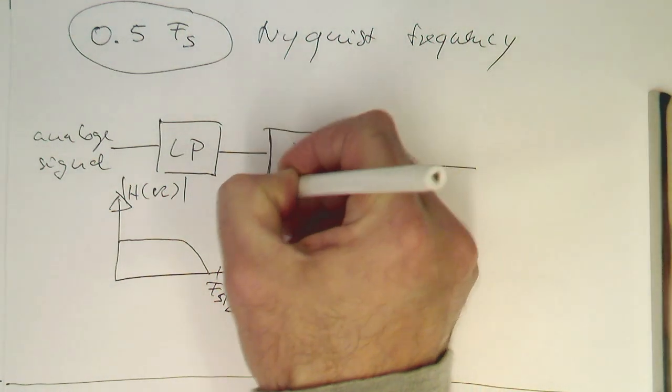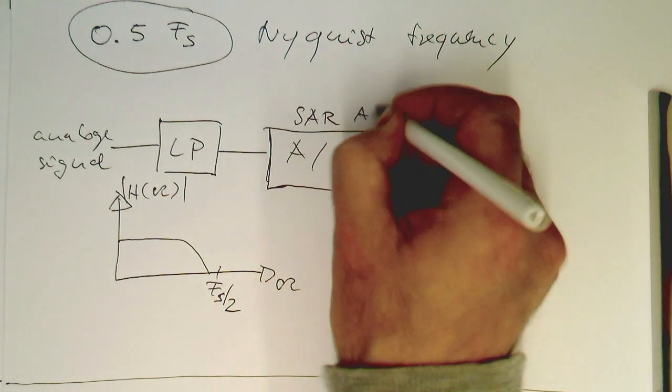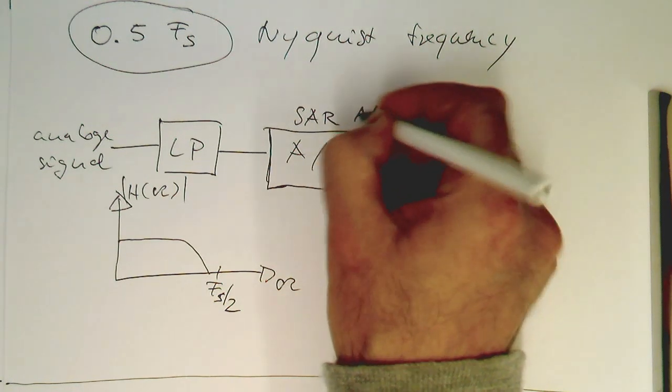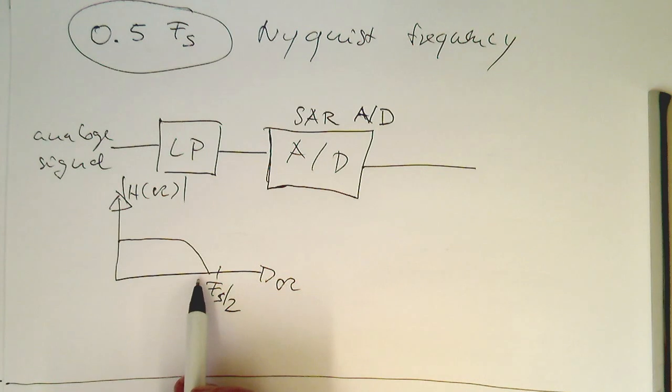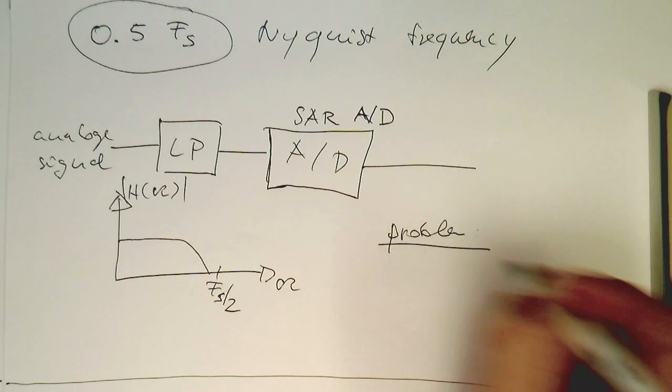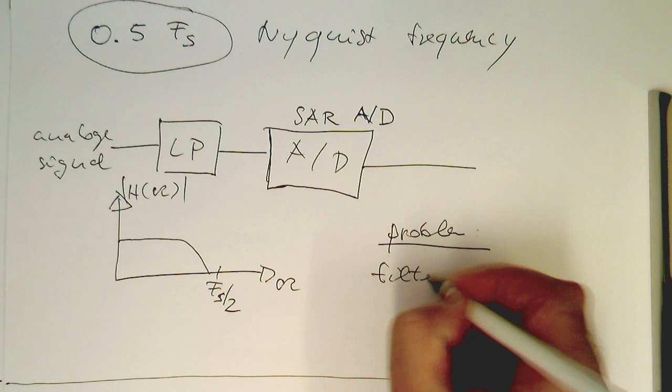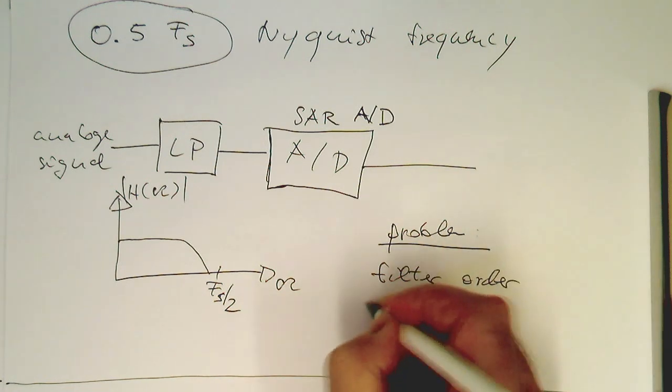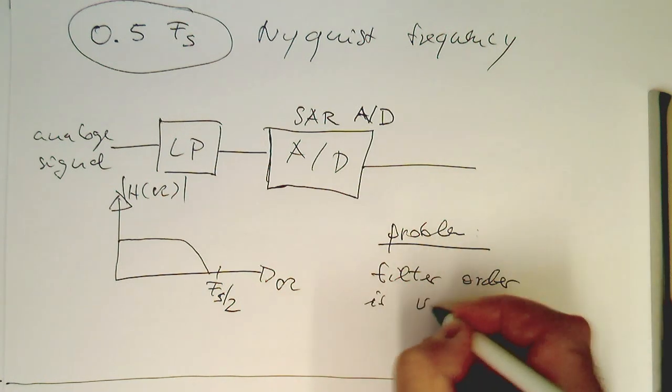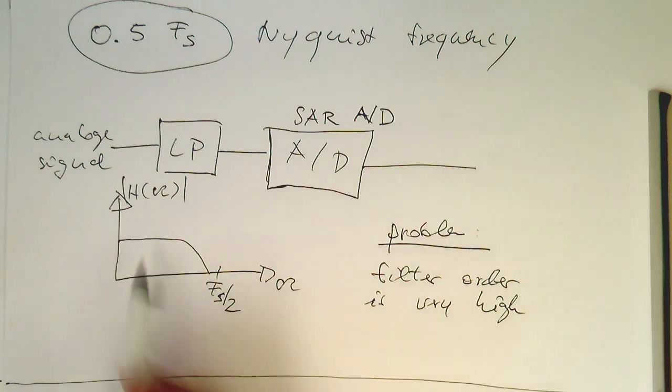So it's usually done in so-called SAR AD converters, that we have a classical low pass filter in front of this. Now the problem with this is that the filter order is very high, or needs to be very high, because we would like to make sure that beyond fs half, there's no component left here.